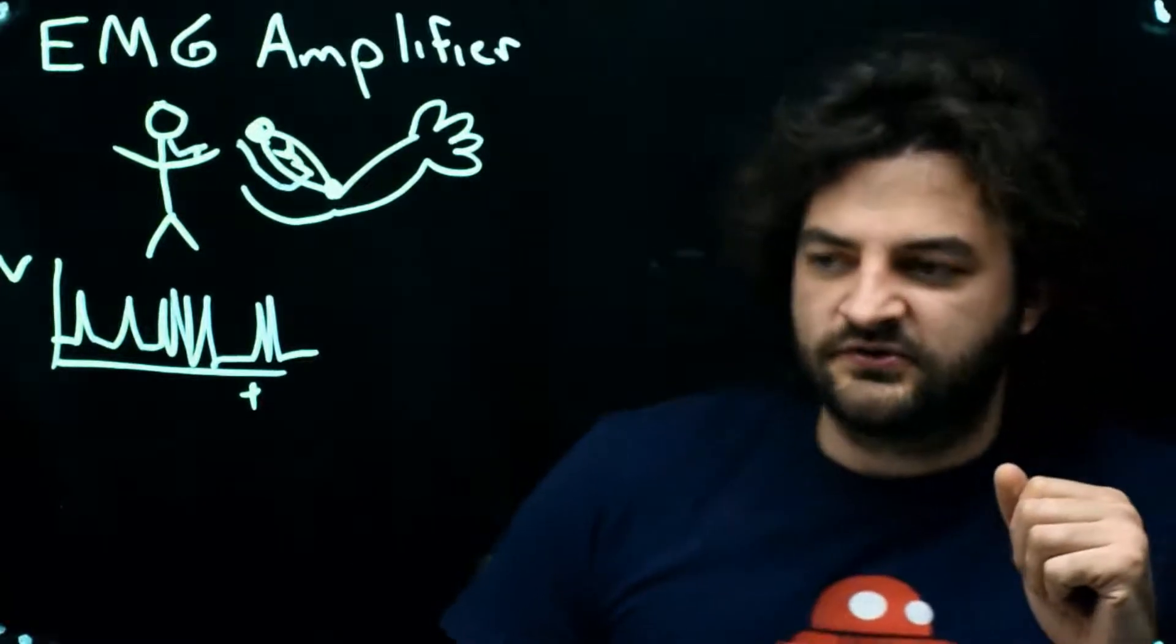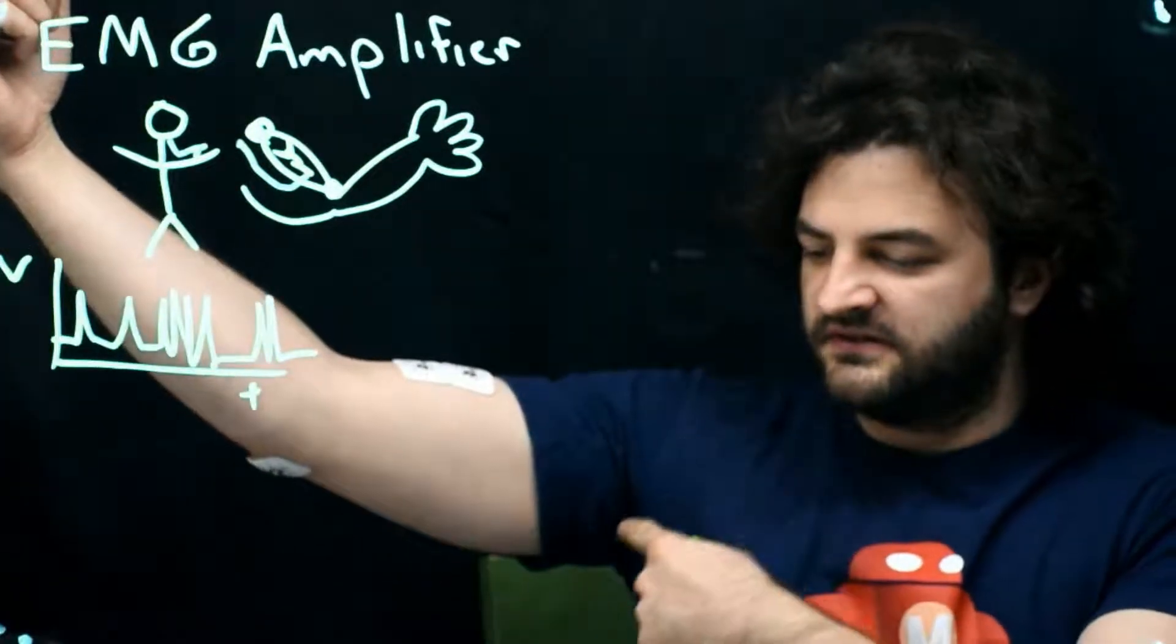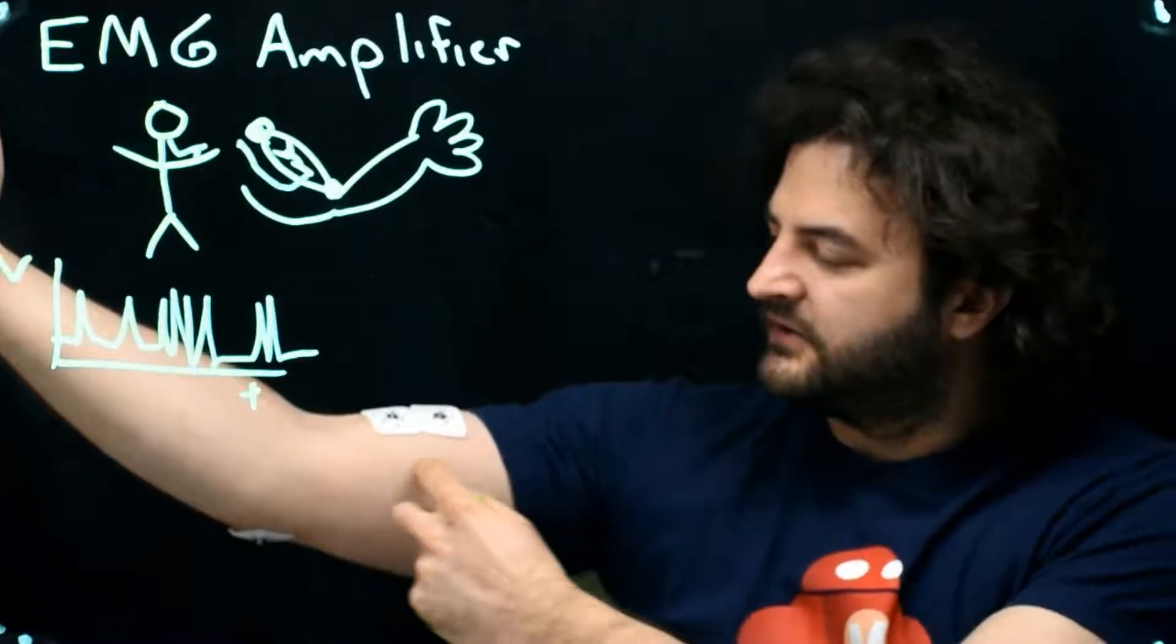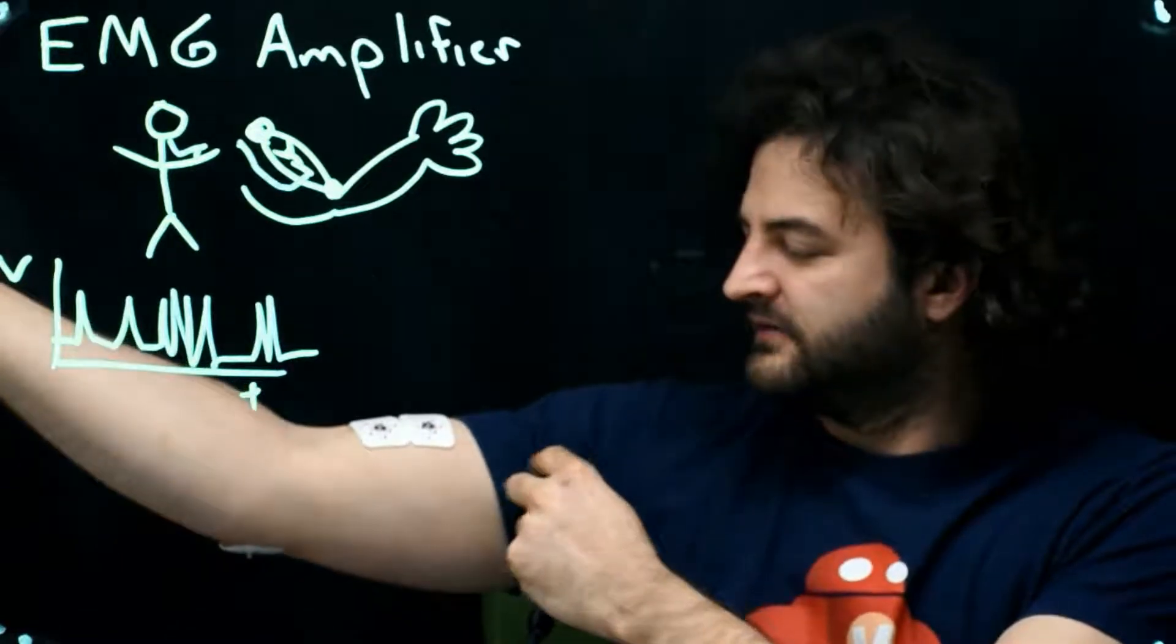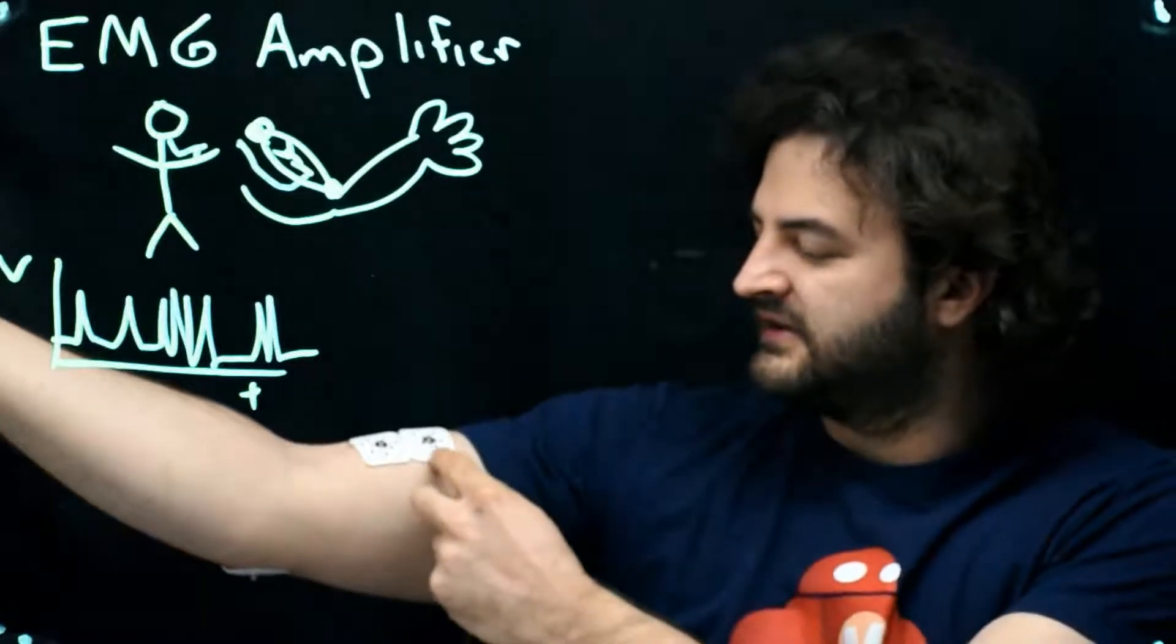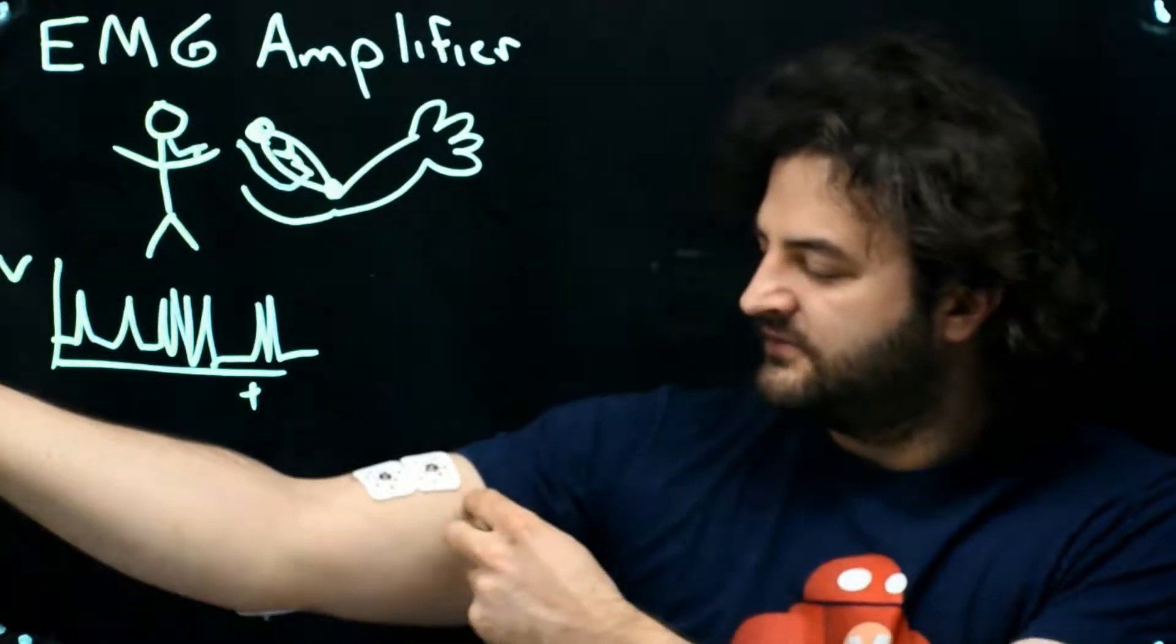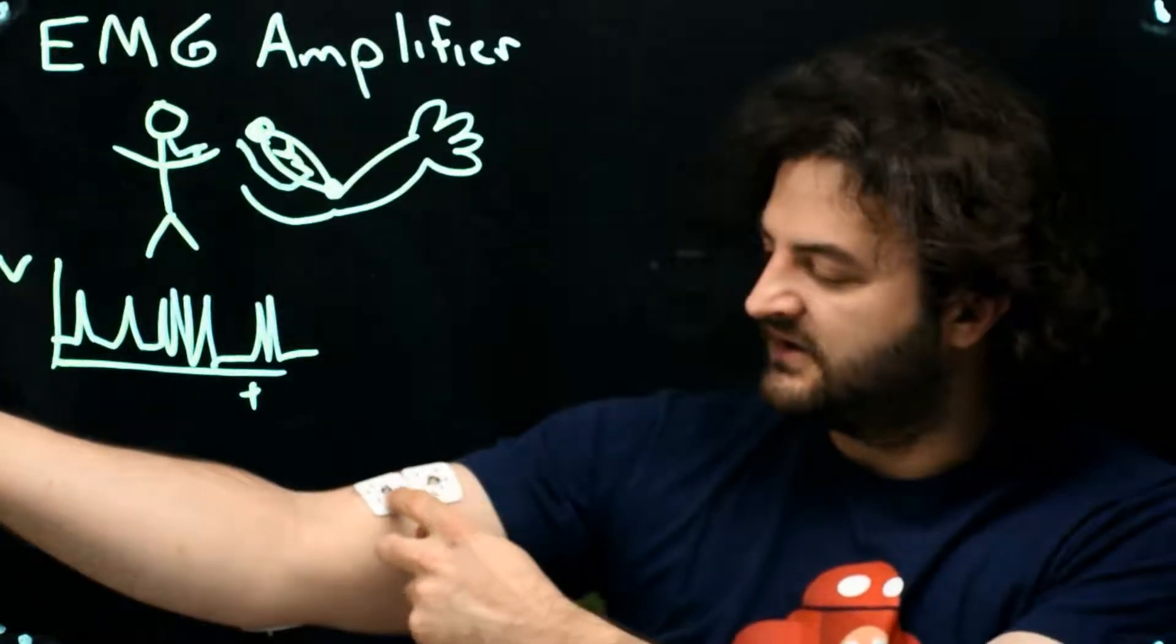We'll take two electrodes and place them on our bicep. The nerve comes in and innervates our bicep probably around one-third in, and then the nerves travel down the muscle length. The pulses are kind of pulsing with time. If we compare this voltage to this voltage, as the wave travels and the spike hits this one, we'll get a positive signal, and then it will leave that signal and hit this one, and we'll get a negative signal.